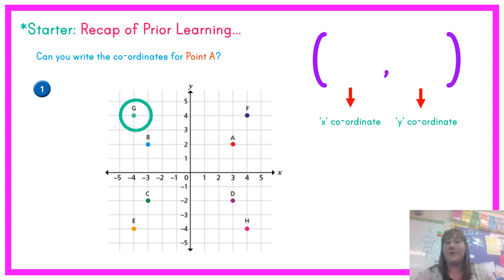And our final coordinate point that we are looking at is G. G is in our second quadrant on our grid. So again reading the x coordinate first we're going across to minus 4 and we're going up this time to 4. So our coordinates for point G are minus 4, 4.